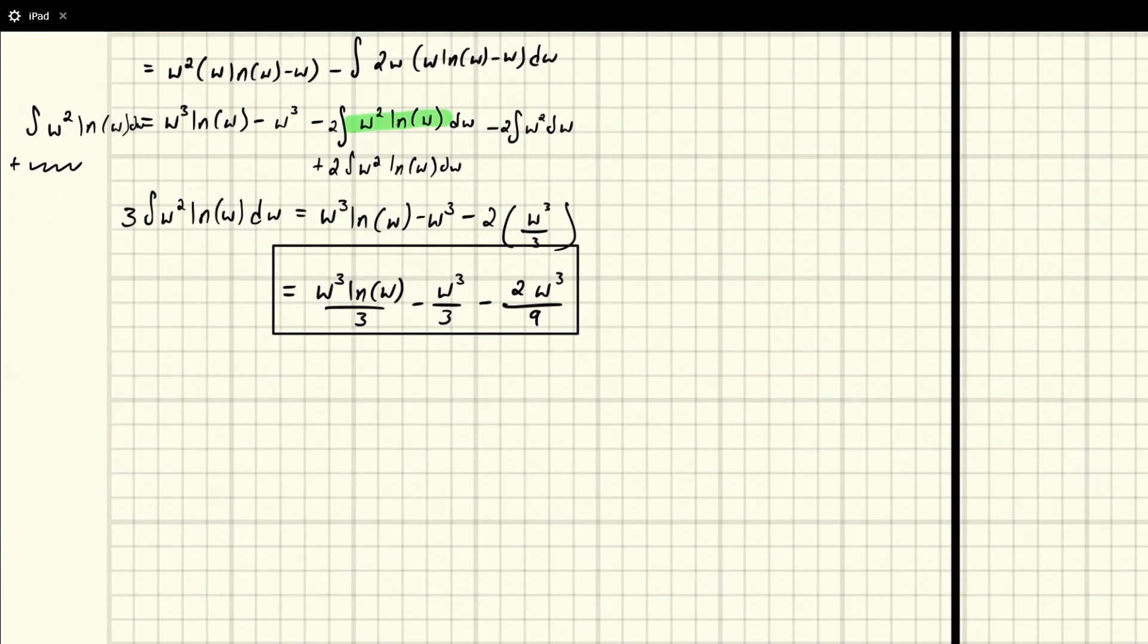Almost made two mistakes. I was looking back over my work really quick, and I noticed that I forgot to distribute this negative sign across. So this should actually be positive, and this should be positive. And we didn't put a plus C here. So this is actually our final answer. That plus C is going to be the death of me. If you've ever lost points to it on an exam, you know how excruciating that plus C can be.